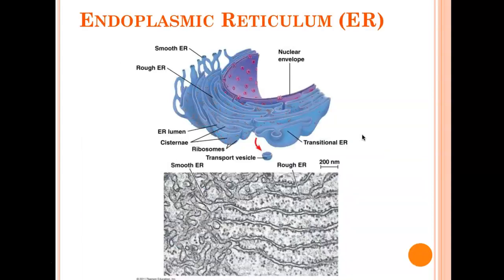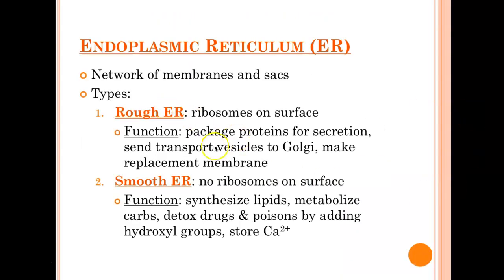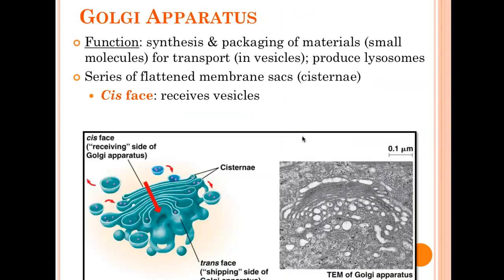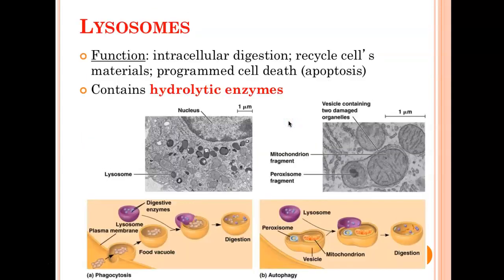Jobs of the rough ER: packaging and transporting proteins, and making replacement membrane — that was an important one. Smooth ER: synthesizing lipids — that was the one I pointed out in class. Golgi: synthesis and packaging of materials; it receives vesicles and it ships vesicles. Lysosomes: intracellular digestion, recycling cell materials, and programmed cell death — apoptosis. Apoptosis is when hydrolytic enzymes are released and basically digest everything in the cell. Lysosomes are made in the Golgi, and they use hydrolytic enzymes to do their job.